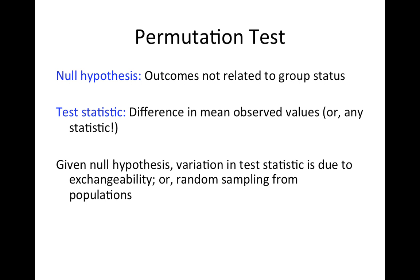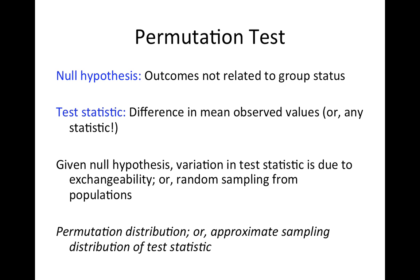Now we're saying we're randomly sampling from the population. If I had a different set of males and a different set of females who ended up in my data set, then I would have ended up with a different difference in means. It's a little bit awkward to use a test that looks at all possible ways of allocating males and females to two groups when we didn't actually randomize, but that's what a permutation test is. You compare two groups that you did not actually randomize by looking at all possible ways that you would have randomized if you could have.